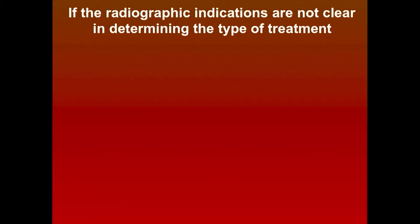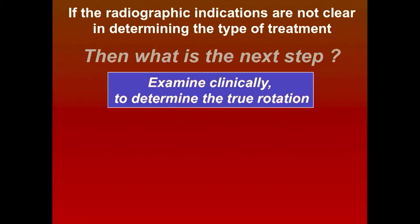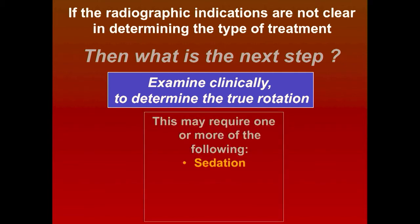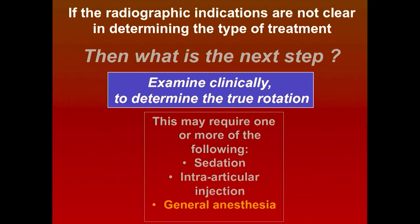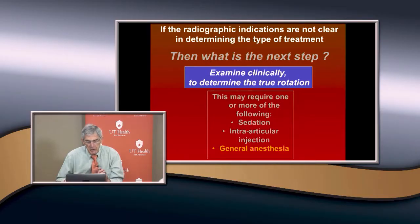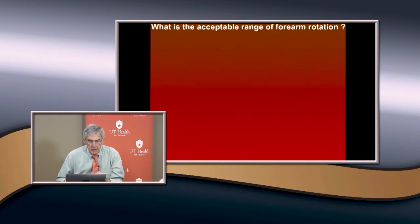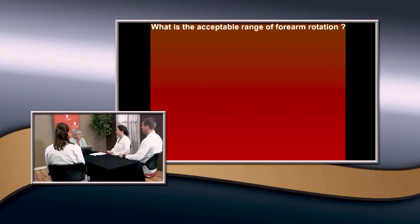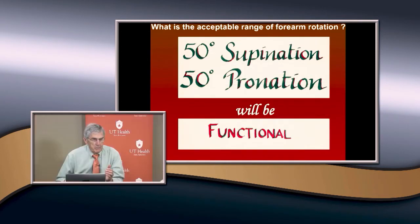If radiological findings are not clear in the emergency room, examine the patient clinically to determine their true rotational range of motion. You can do this under sedation, intra-articular injection with local anesthesia after aspirating the hematoma, or general anesthesia — which may be preferable if more aggressive treatment is anticipated. The acceptable limit of forearm rotation is about 50 degrees of supination and pronation for functional use.